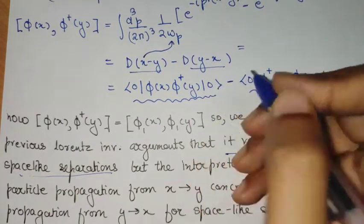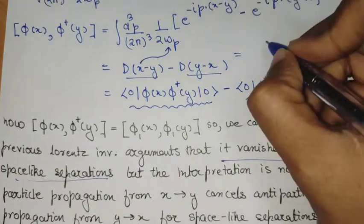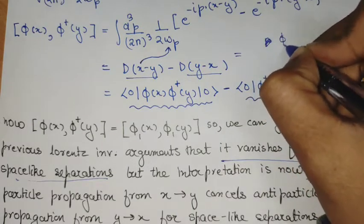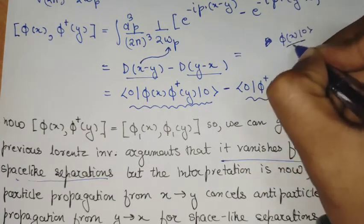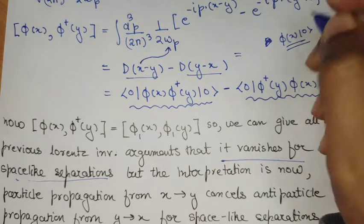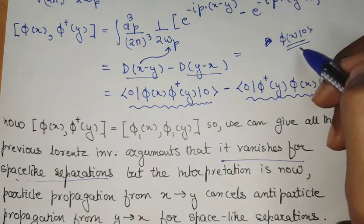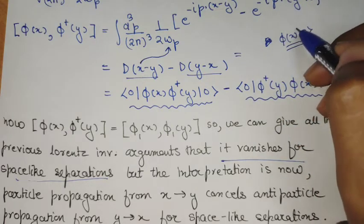But now this is important that it vanishes for the space-like separation because this minus this is zero. But what it means is that phi of x acting at a point zero, this can be interpreted as creating a particle at a space-time location x,